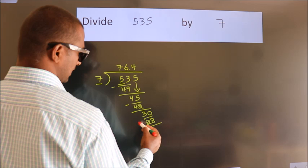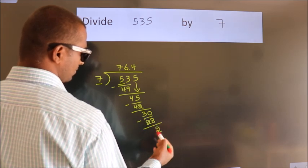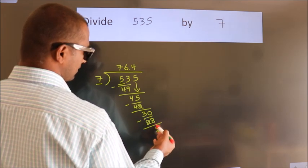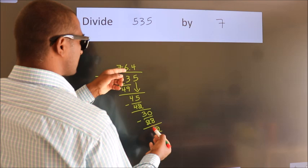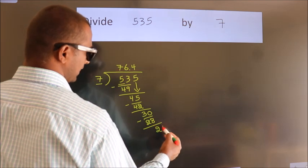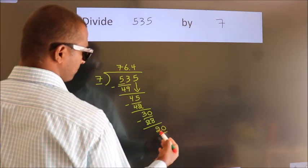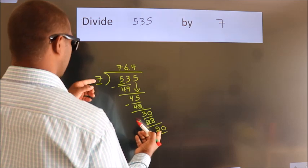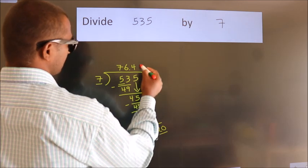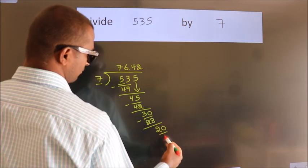Now we subtract. We get 2. After this we already have the decimal, so directly take 0, so 20. A number close to 20 in the 7 table is 7 times 2 is 14.